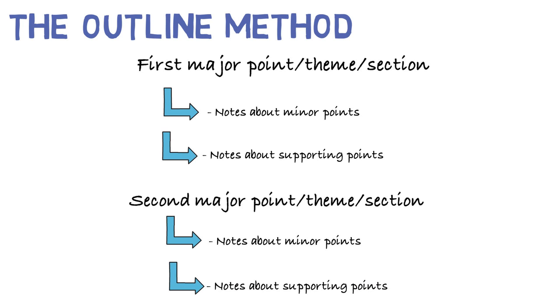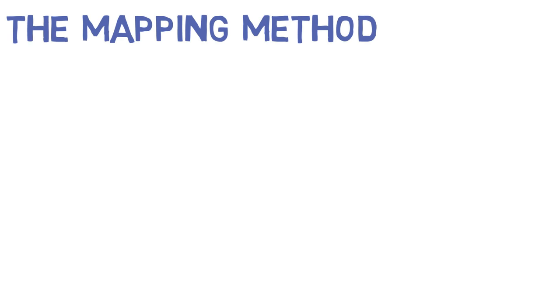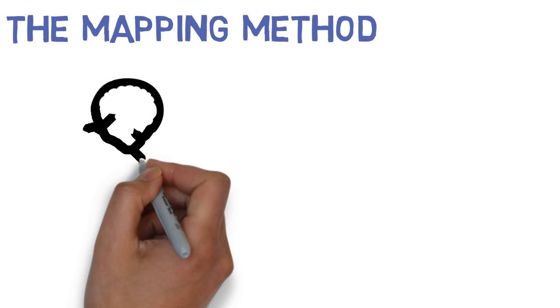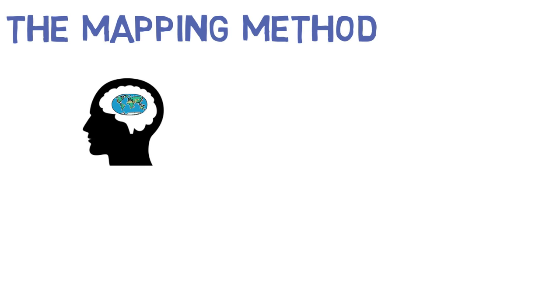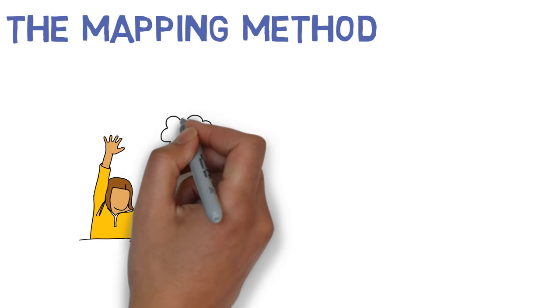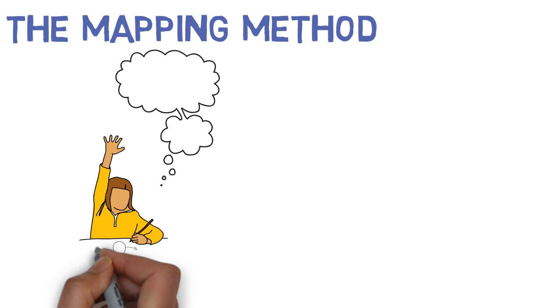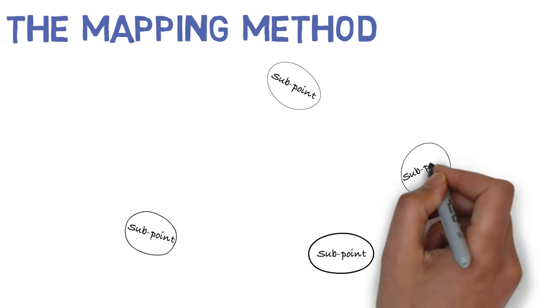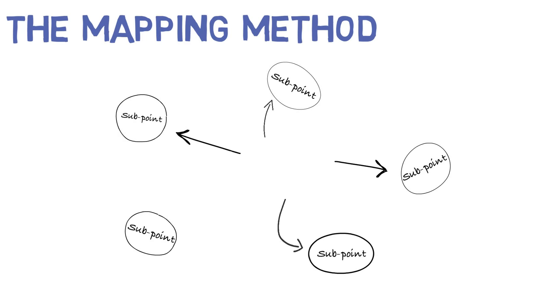The next method is the mapping method. Remember the hundreds of mind maps your teachers made you draw in middle school? That's because they knew just how helpful they'd be in your future. The mapping method can maximize active participation and emphasizes critical thinking. It makes you focus on key points rather than writing everything you hear. The mapping method is done by linking several sub-points around a major topic. To begin critical thinking, you should find links between different points or topics.